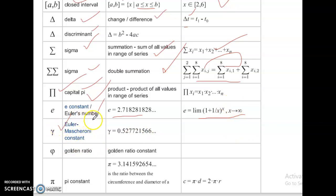Gamma. Euler-Mascheroni constant. Gamma equal to 0.5272156.